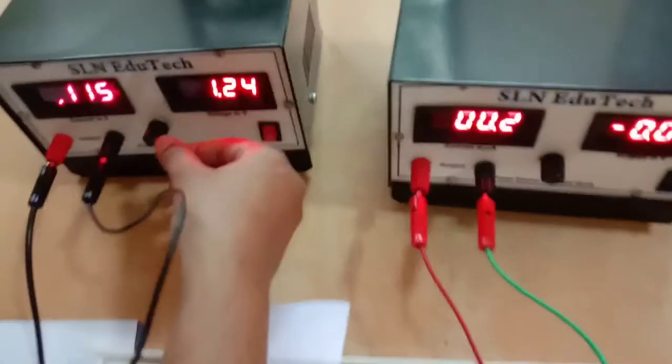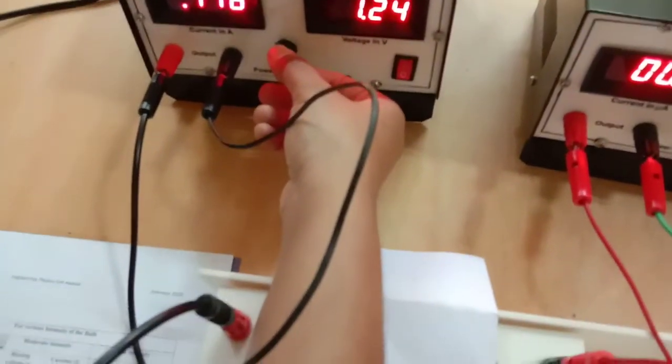Every time you need to record one reading, that's the current reading across the bulb. At the same time, note down the current across the photodiode. Let me show you. First I will keep across the bulb the voltage as 5.